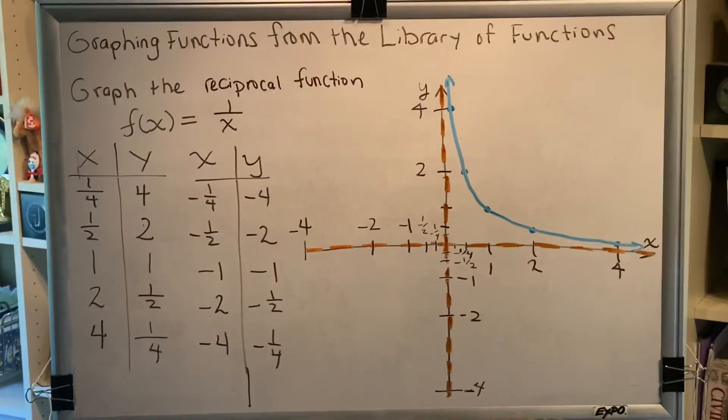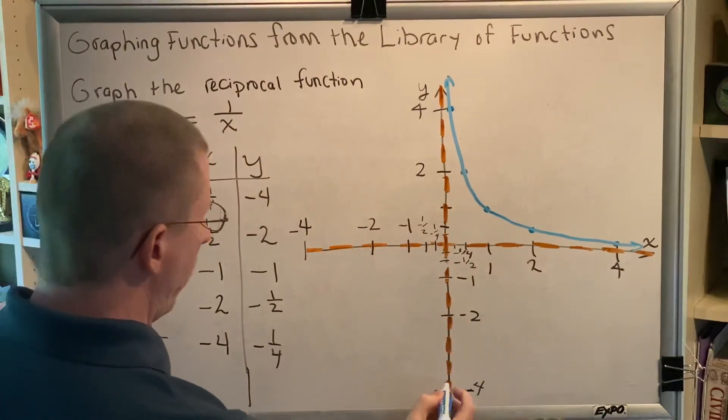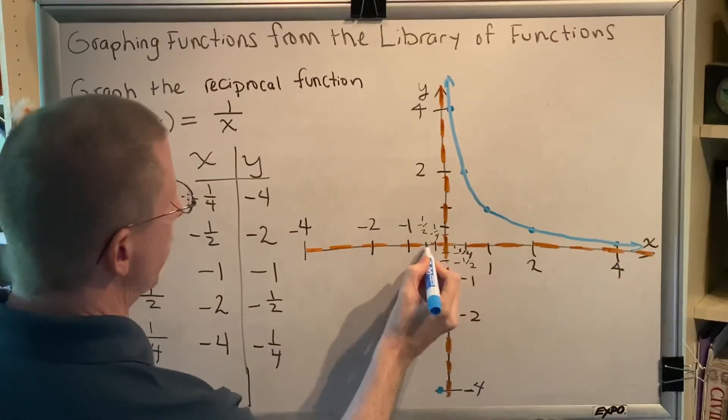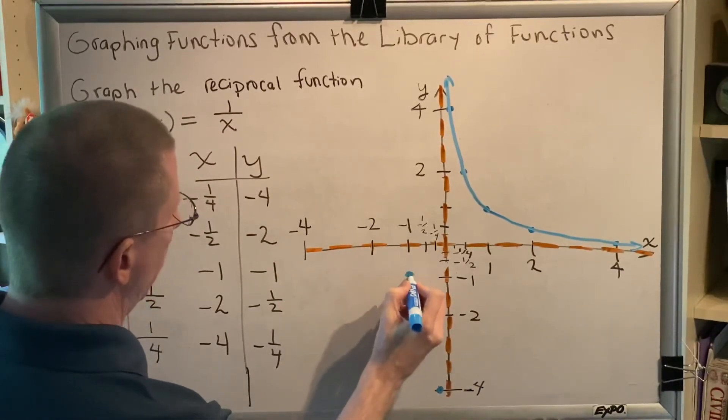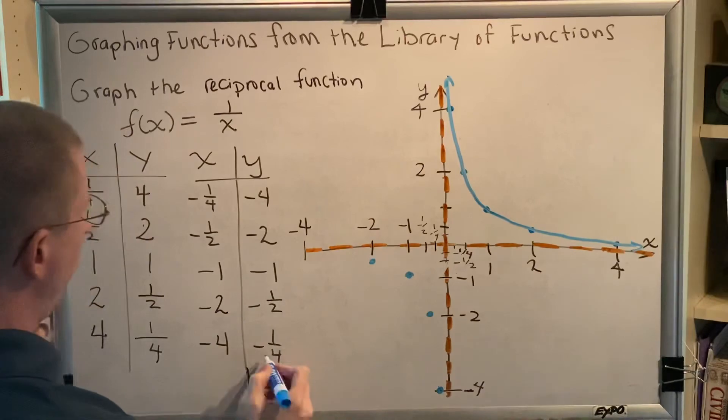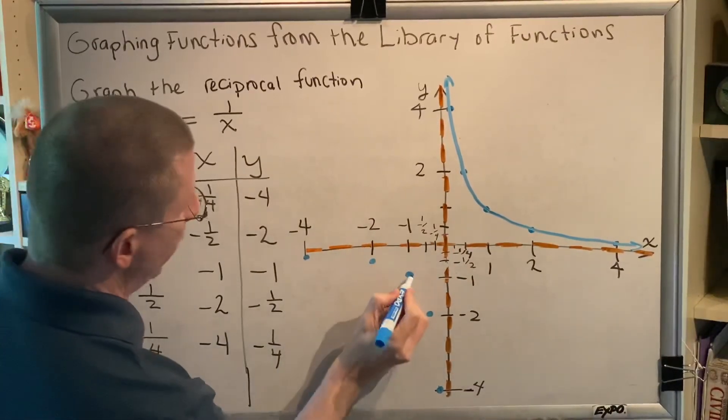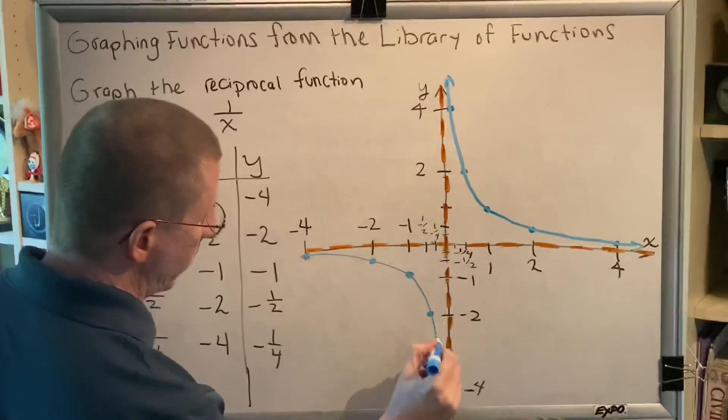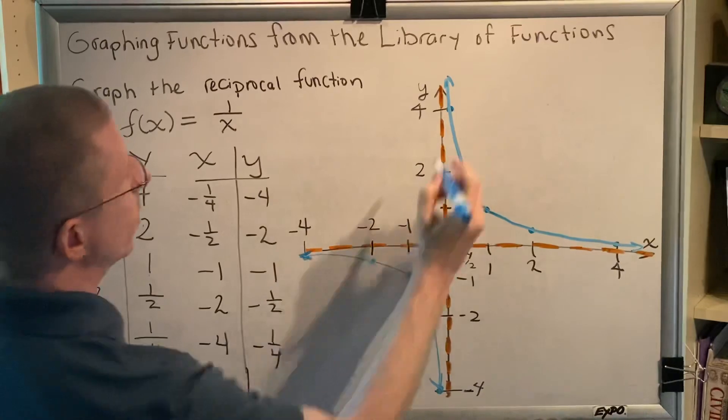All right, now we can plot all of our points. So, negative 1 quarter, negative 4 means 1 quarter to the left and 4 down, which would be here. Negative 1 half, negative 2 means 1 half to the left, down 2. Negative 1, negative 1, that's easy. Negative 2, negative 1 half, is 2 to the left, down 1 half. Negative 4, negative 1 quarter, is 4 to the left, down 1 quarter. And now we connect these dots. And these also are going to approach the x and y-axis asymptotically. And so, this is the picture that we get. This is what the reciprocal function looks like.